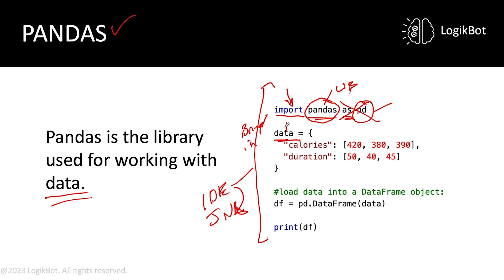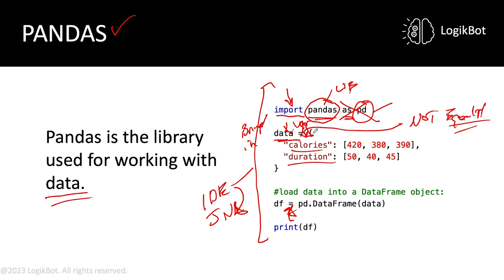'Data' is a variable. Variables hold data — here they're holding calories and duration. A single equals sign in Python is assignment, not equality. Two equals signs is equality in Python. You'll have to know that because it's an interview question you'll see all the time. So here, we're assigning all this data to our data variable.